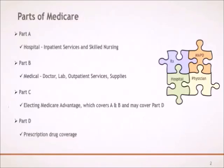Medicare gives letters to its types of health coverage benefits available to you. Part A is your hospital coverage, which includes inpatient services and skilled nursing facilities. Part B is your medical coverage, which includes doctor, lab, outpatient services, and supplies. Part C refers to the types of Medicare health plans, such as Medicare Advantage, private fee-for-service, and Medicare savings account plans. These plans cover the Medicare benefits under Part A and Part B. Many Medicare Advantage plans also cover Part D prescription drug coverage.